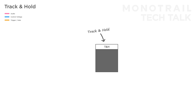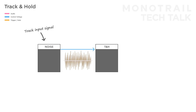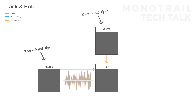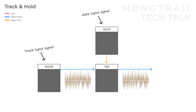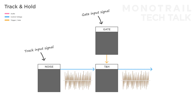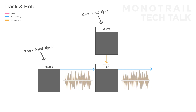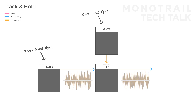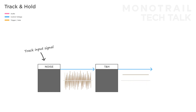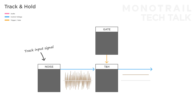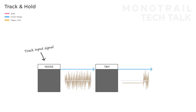The track and hold function is also based on two inputs but works differently. In this case the sample input can be called track input. When the module receives a gate or a signal high enough to pass a threshold at its second input, it will start tracking the input signal, effectively resulting in an exact copy of the input signal for as long as the gate is high. However, at the moment you stop feeding the module a high gate, it will hold the current value for as long as the gate input is low. So a high gate is track and the low gate is hold.